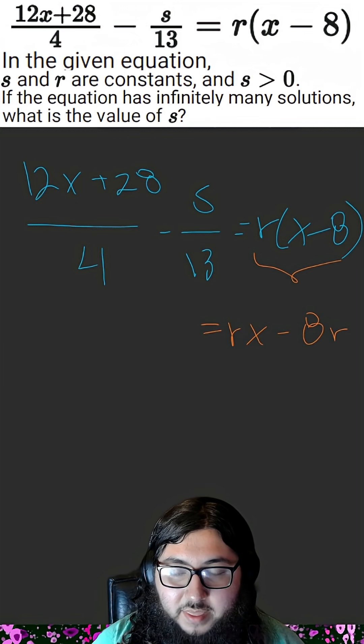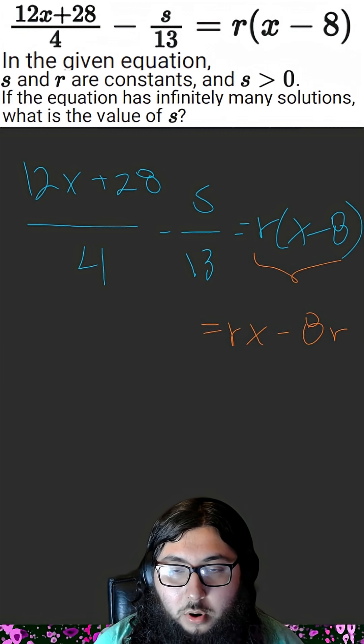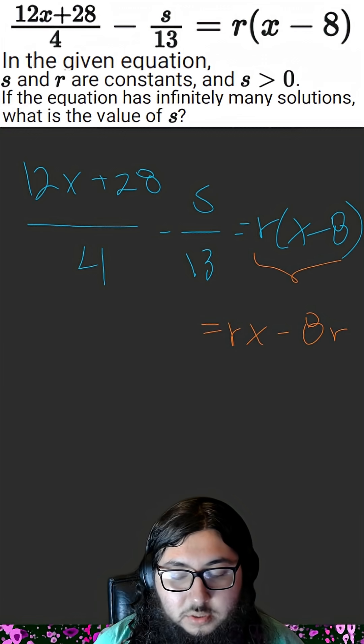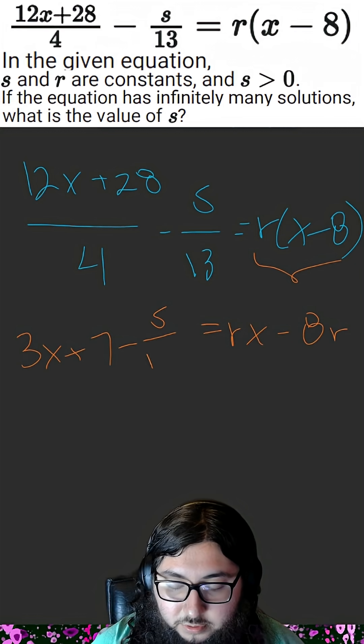It's just easier to identify that in this form. On the left-hand side, we want to recognize that 12, 28, and 4 all have the greatest common factor of 4. So we can simplify that expression to 3x plus 7 minus s over 13.